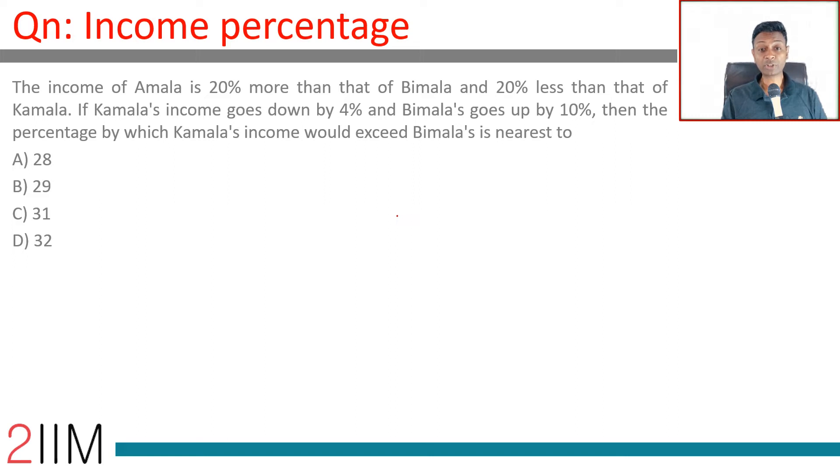The income of Amala is 20% more than that of Bimala and 20% less than that of Kamala. So Amala, Bimala, Kamala. If Bimala is B, Amala is 1.2B.